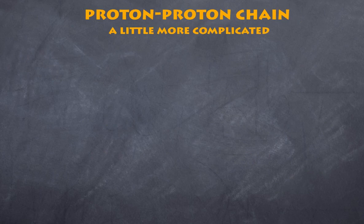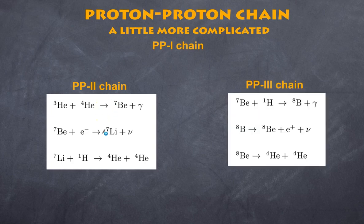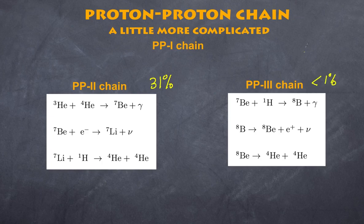Life is a little more complicated: the chain just described is the proton-proton 1 chain, and it occurs about 65% of the time in the sun. There are two other versions: the proton-proton 2 chain, occurring about 31% of the time, and the proton-proton 3 chain, which occurs less than 1% of the time. The PP1 chain is the most common; the details of PP2 and PP3 can be looked up separately.